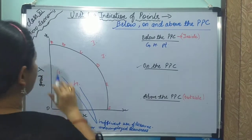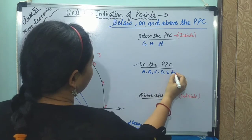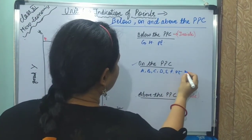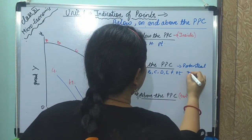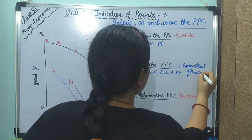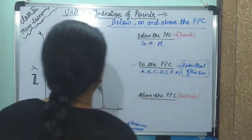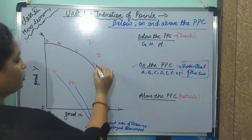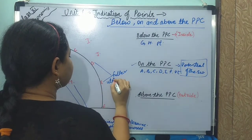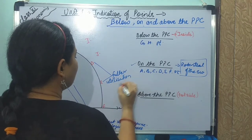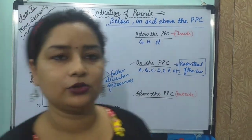Points on the PPC — like A, B, C, D, E, F — all show the potential of the economy. These points indicate fuller utilization of resources. They show that an economy can work at this level when all resources are optimally utilized. This is the maximum potential boundary of the economy.